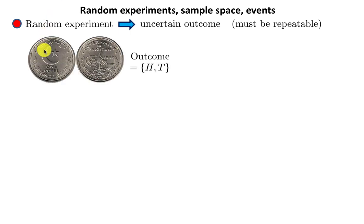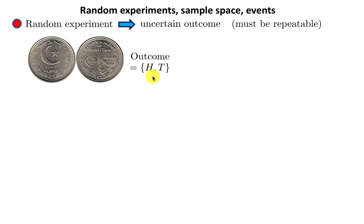However, in a random experiment, the outcome can be uncertain. Each time you do that experiment, you could get something different. This random experiment must be repeatable. For example, you can flip a coin — it will land either on one side or the other. You would call the outcome heads or tails. Of course, it is possible that a coin could land on its side, in which case you would add a third outcome: heads, tails, or sides. But unless it is a very unusual coin, there are two outcomes.